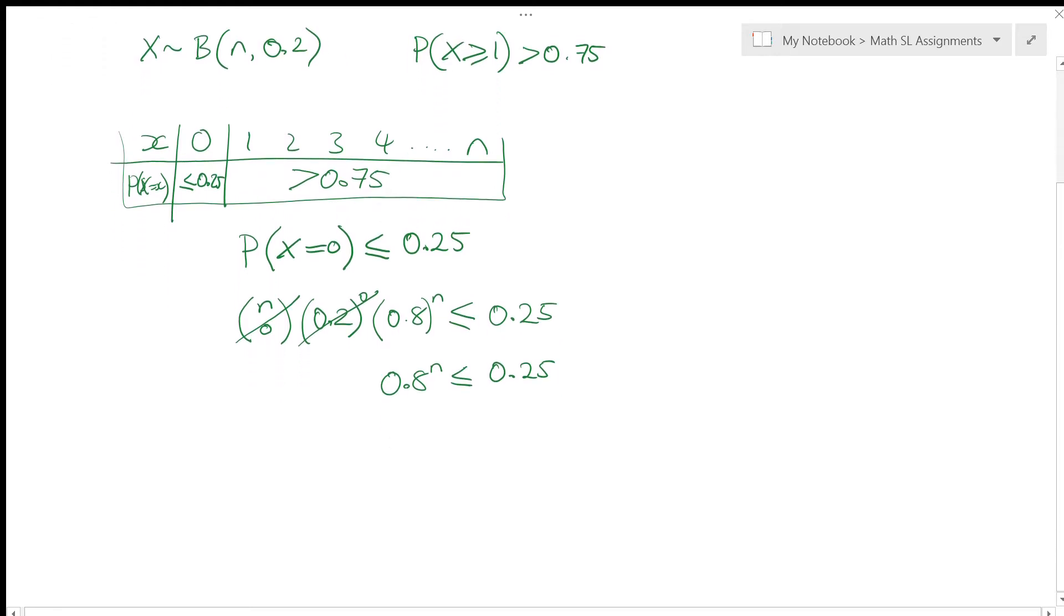Okay, so if I try and solve this with log, so I've got n log 0.8 needs to be less than log of 0.25. Now, here I have to be really careful because if I check my calculator, log of 0.8 is actually a negative number,